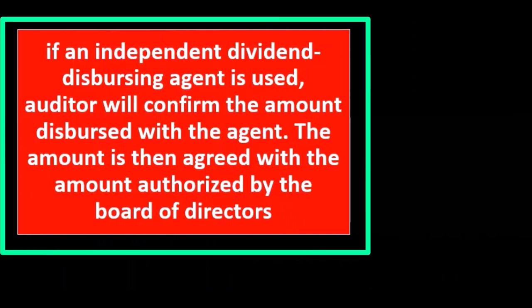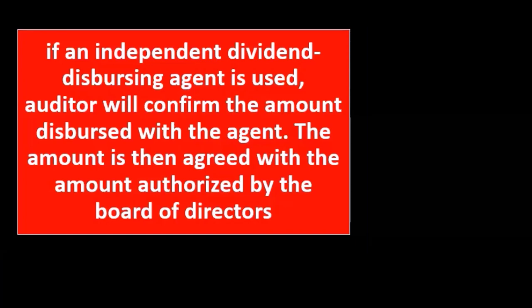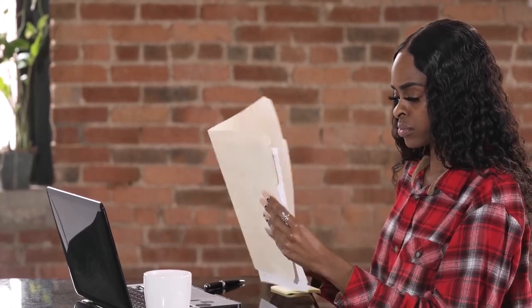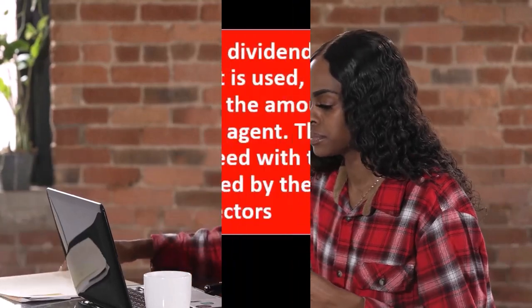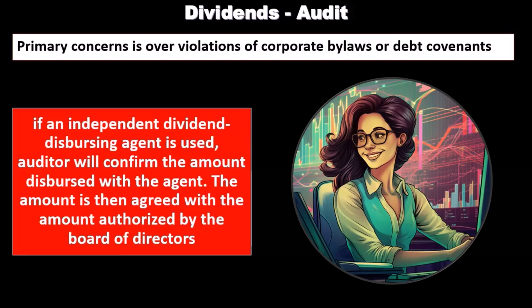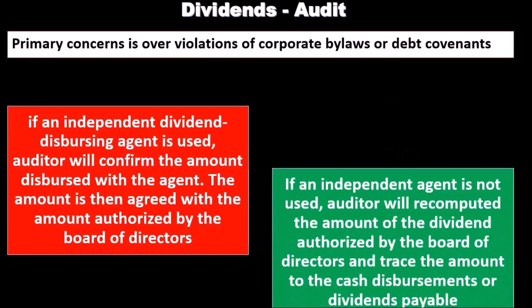If an independent dividend disbursement agent is used, the auditor will confirm the amount dispersed with the agent. That amount is then agreed with the amount authorized by the board of directors. This third-party individual is outside the company and therefore provides good audit evidence.